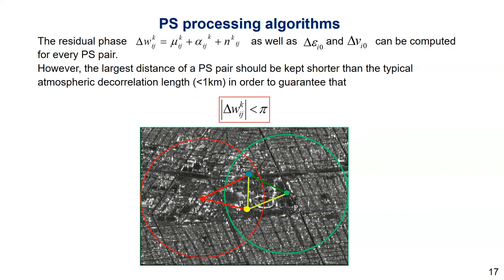However, when we do it, when we process it, we have to take into account that the largest distance of a PS pair should be kept about the typical average decorrelation length, for example usually about 1 km, to warrant that the condition of a low variance of the phase residue is fulfilled.